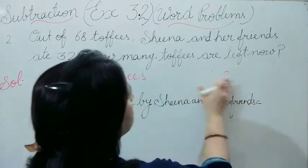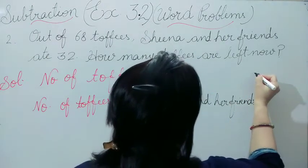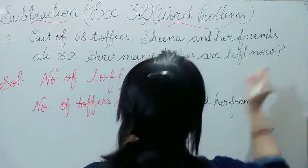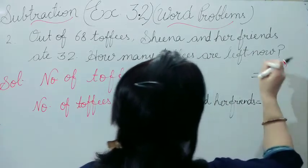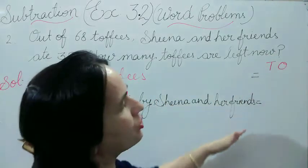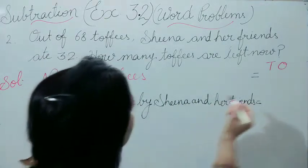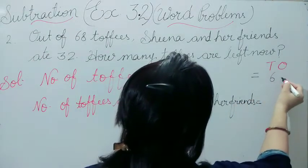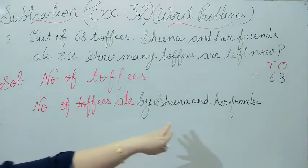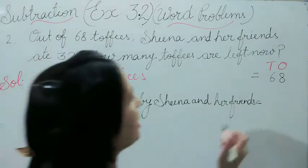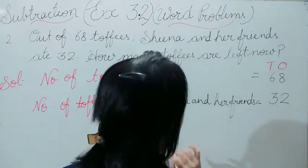We will write some space away there — always keep in mind that when we write the numbers, all three lines should be in the same alignment. Number of toffees: 68. Number of toffees eaten by Sheena and her friends: 32.